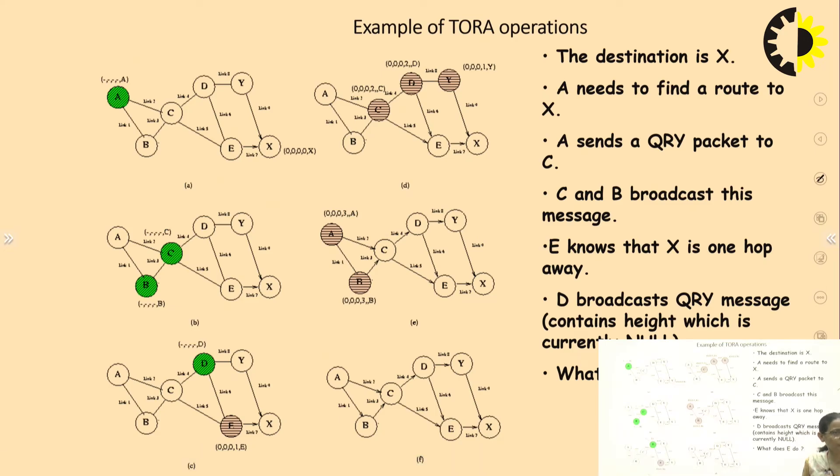Let us understand TORA with the help of an example. In this case we are having this as my source node and this is my destination node. How I had identified the destination node? Because earlier we have said that all the parameters of the destination node are set to 0. The destination in this case is X, A is a source and it needs to find a route to X. It will send the query packet. It will send the query packet to both C as well as to B because it is broadcasting. C and B broadcast this message. E knows that X is one hop away. D broadcasts the QRY message. It contains the height which is currently null.